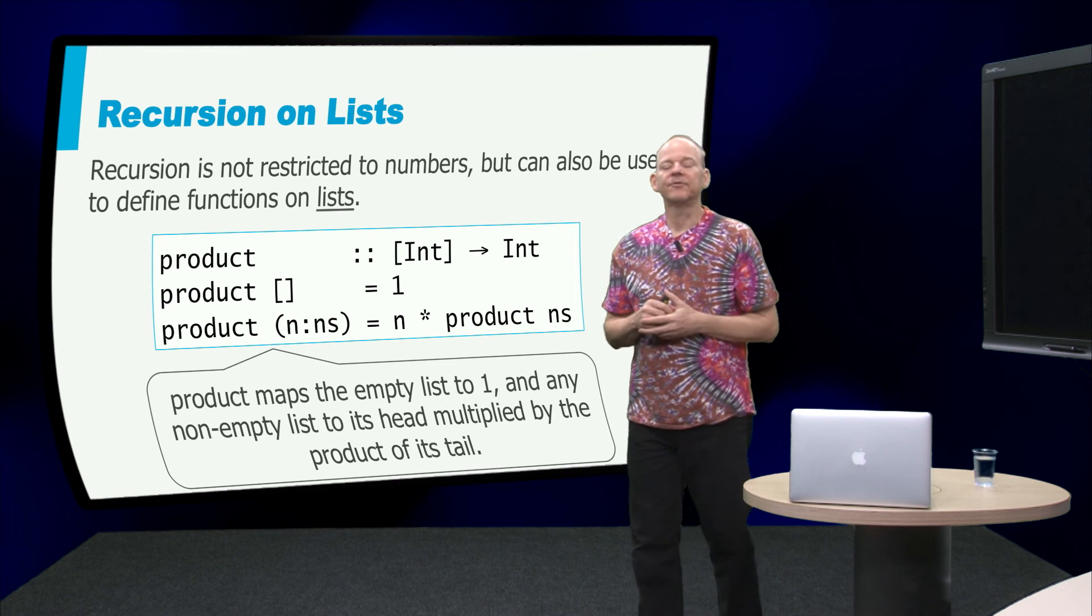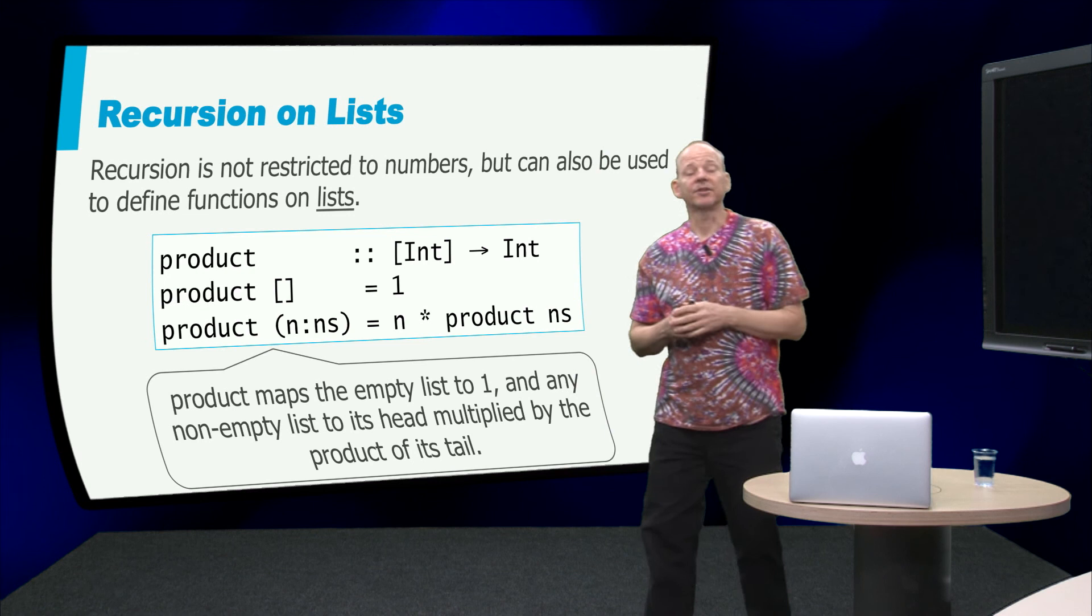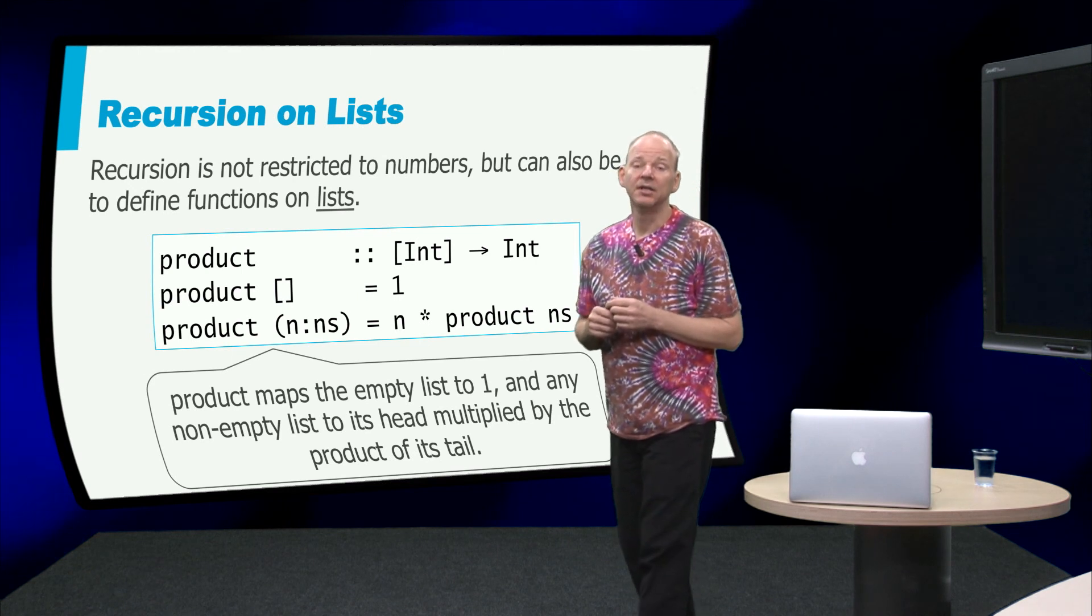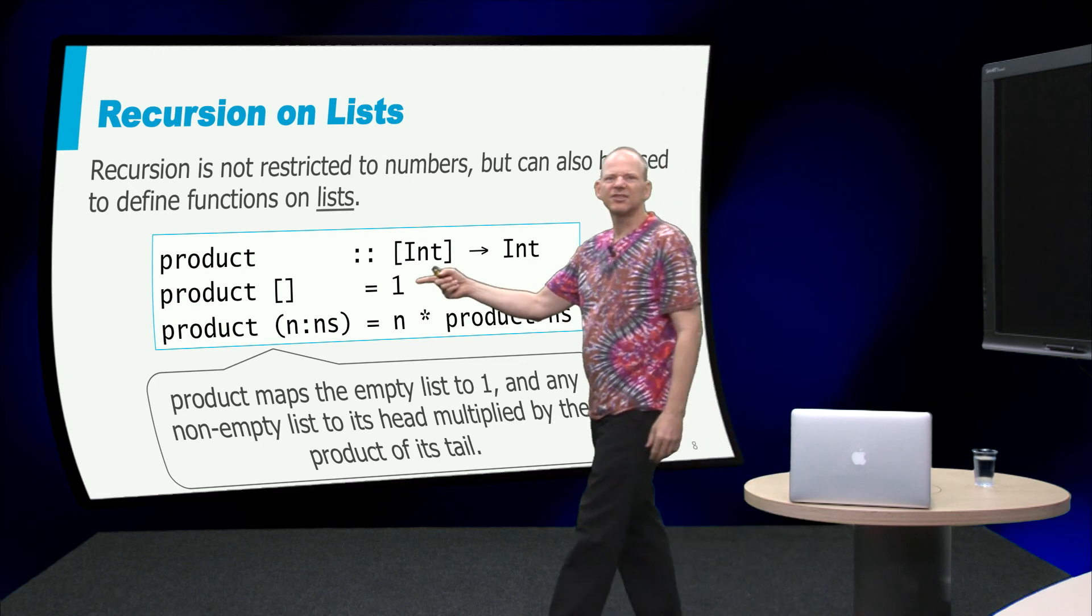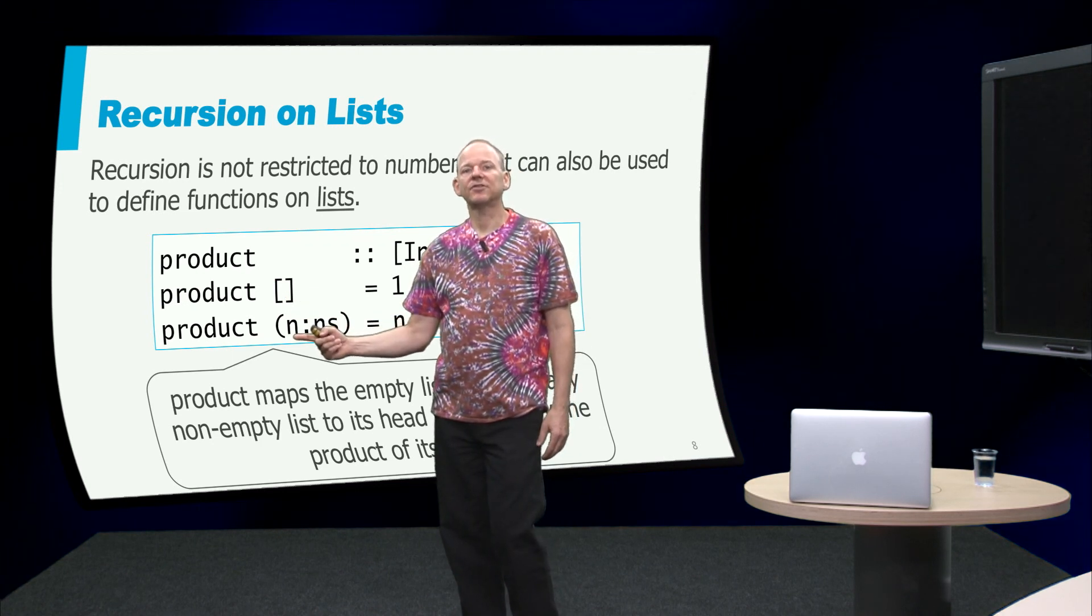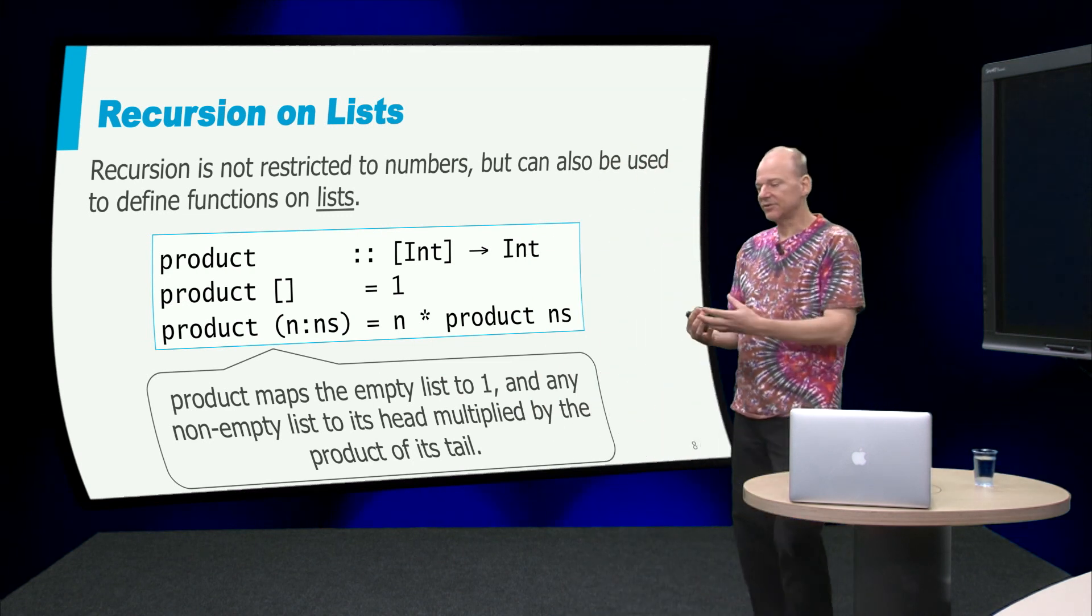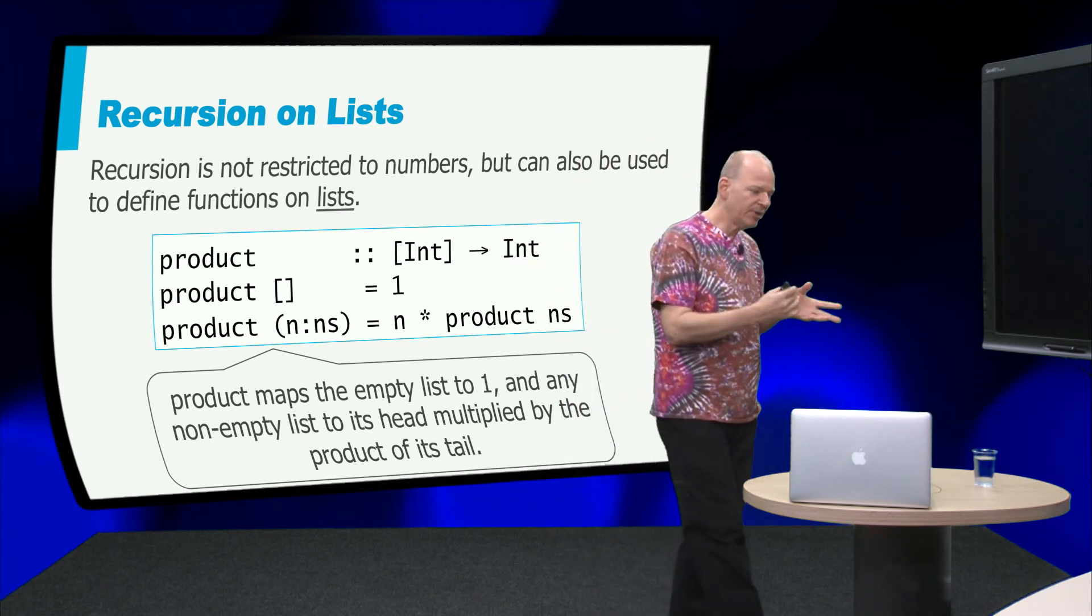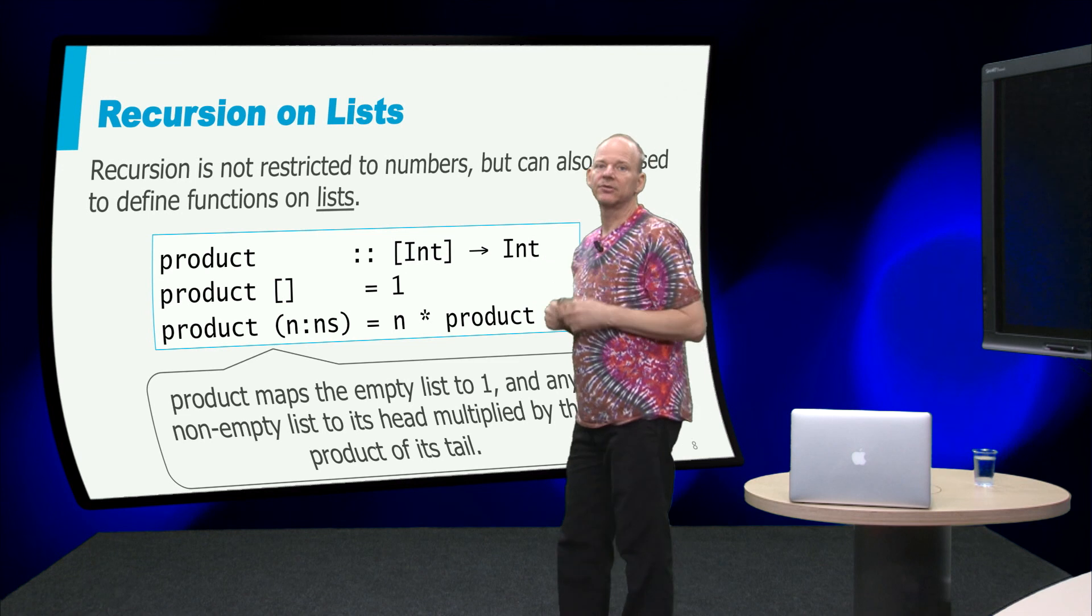Let's look at another example of defining a recursive function where we are using this product function that we used in the earlier definition of factorial. And let's define that using recursion over lists. So in this case the structure is exactly the same, there are two cases. We either have the empty list or we have a list of n cons ns. So we look at the recursive structure of lists and then we define a function over that recursive structure. And the same with numbers.